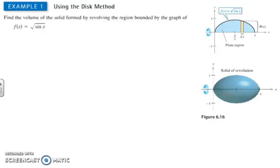Now we're going to take a look at finding the volume of revolution. The first example is finding the volume of revolution using f(x) equals the square root of sine x as the function to spin, and we're going to spin this about the x-axis.